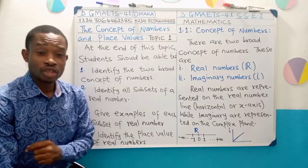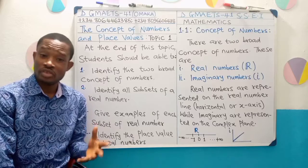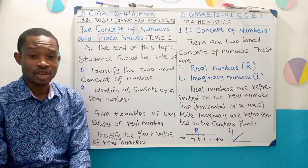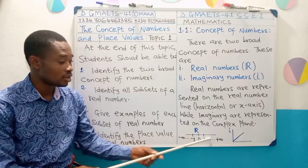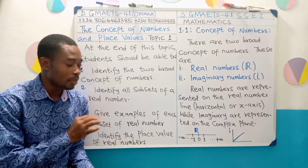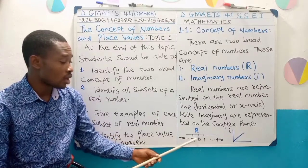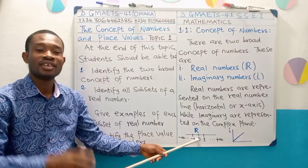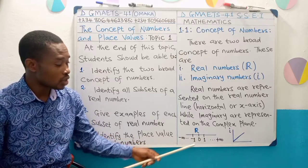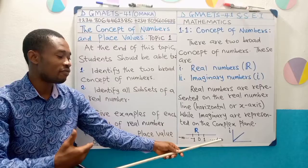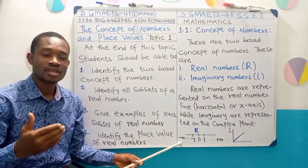Our real numbers are usually shown on what we call the real number line — have you seen the real number line before? We have it on the board here. This line is divided into two parts: the positive side and the negative side. Zero is what divides the real number line into these two parts. The positive side moves up to plus infinity, and the negative side moves up to minus infinity.